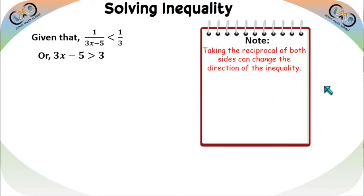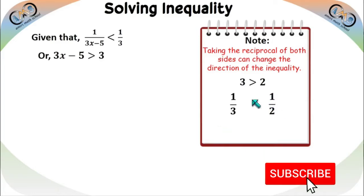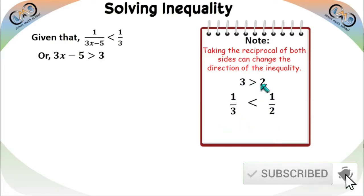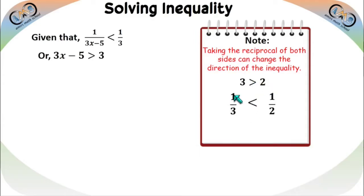For example, we know 3 > 2. The reciprocal of 3 is 1/3 and the reciprocal of 2 is 1/2. Between these two, 1/2 > 1/3. So taking reciprocals of both sides of 3 > 2 gives 1/3 < 1/2 — the inequality direction is reversed. Applying this to our problem: from 1/(3x−5) < 1/3, taking reciprocals gives 3x−5 > 3.